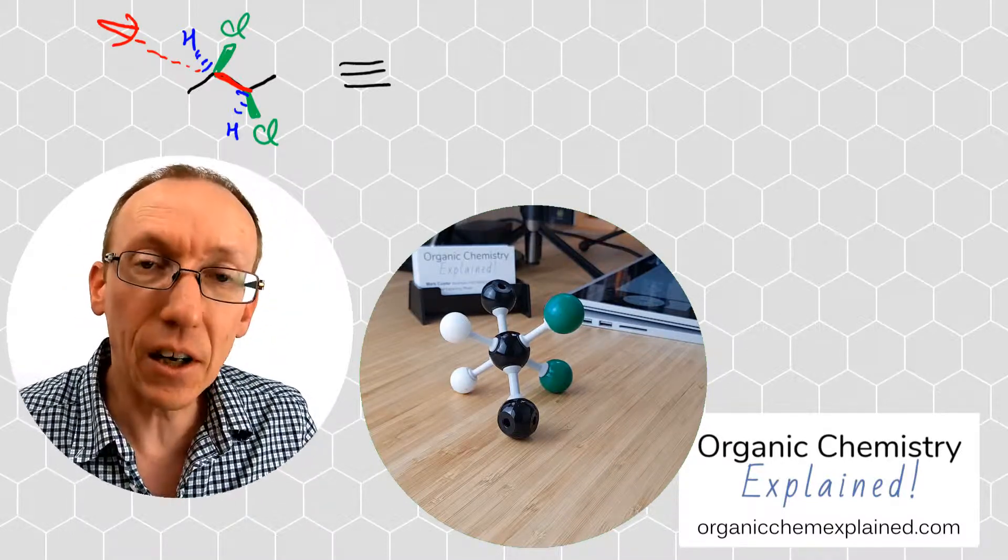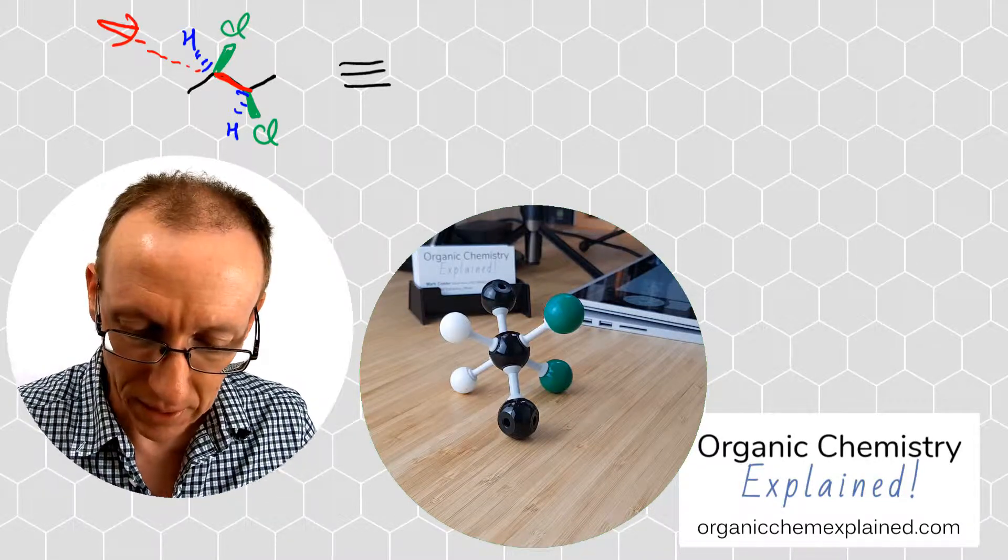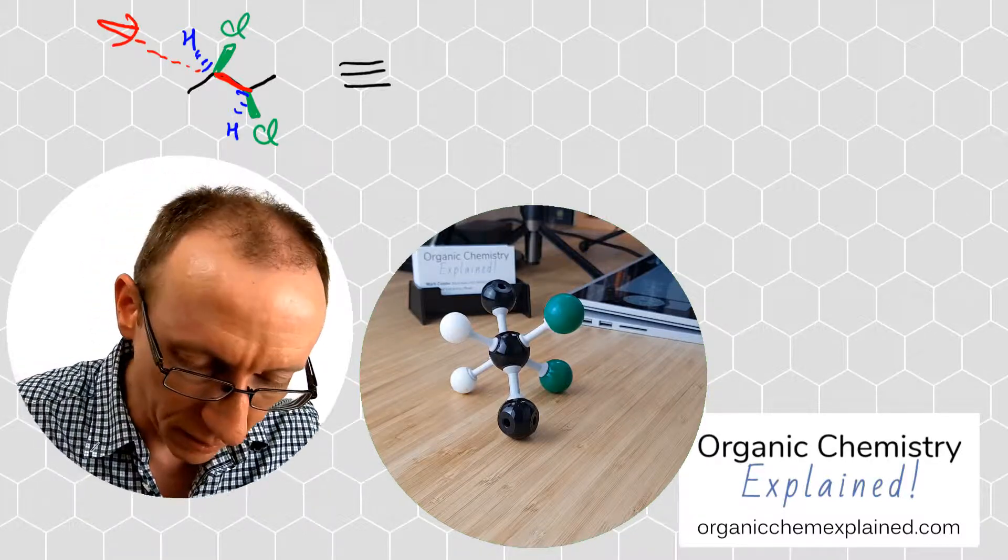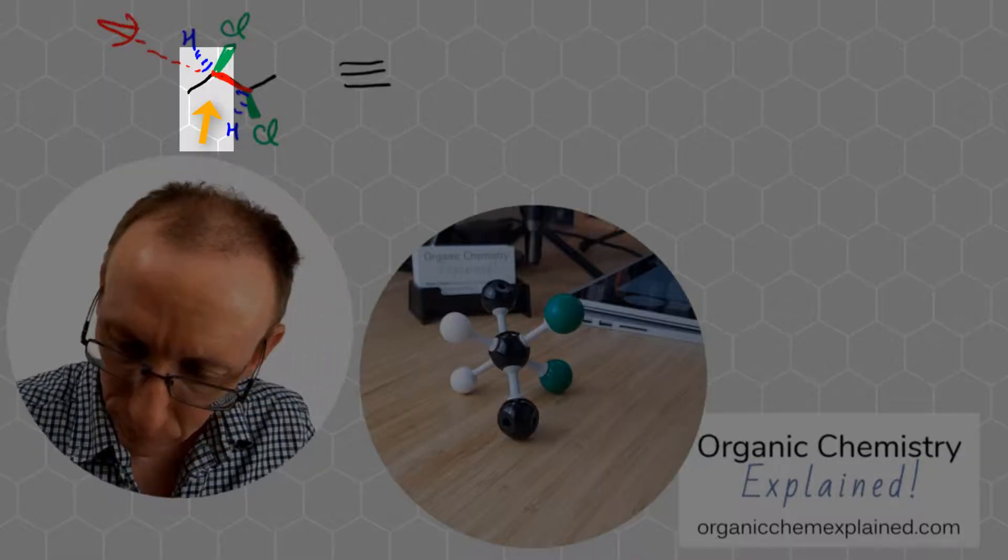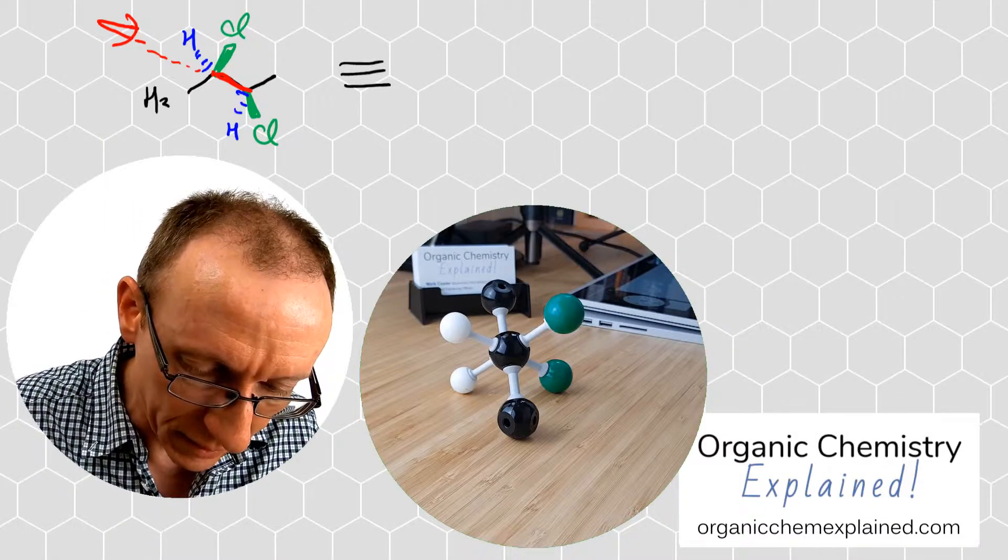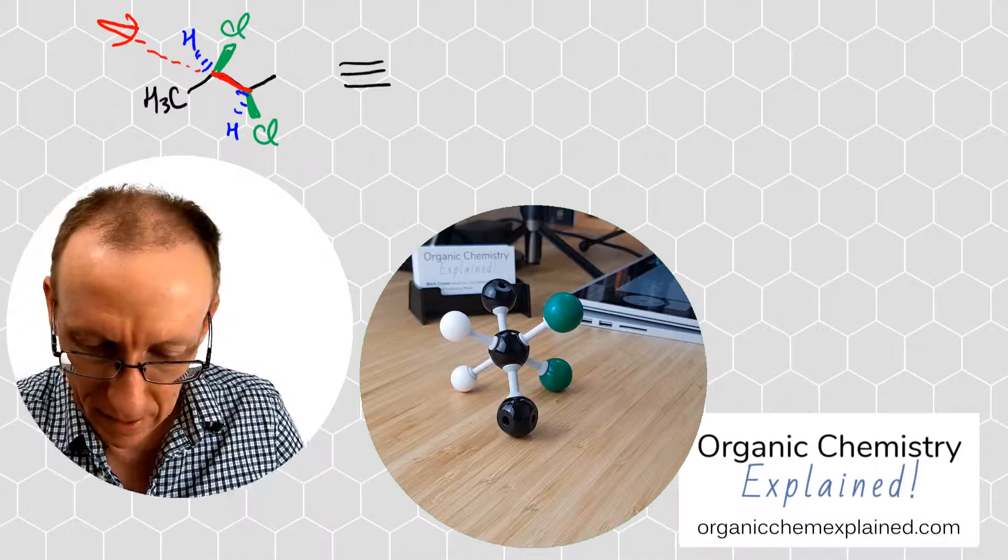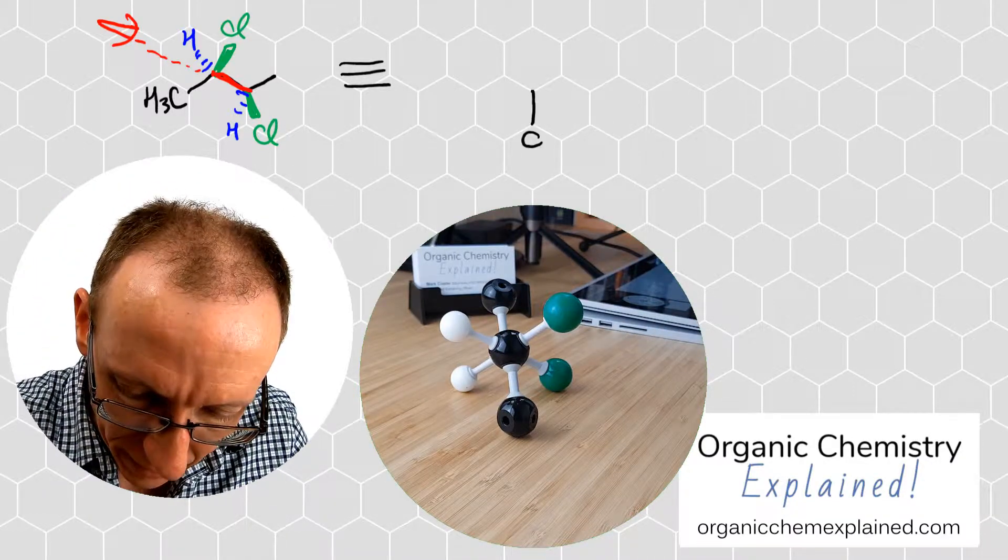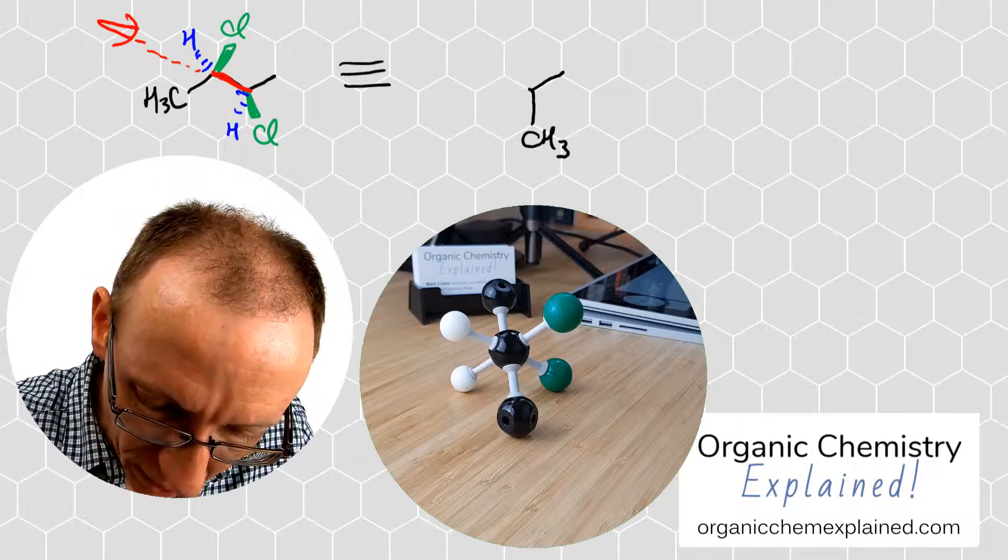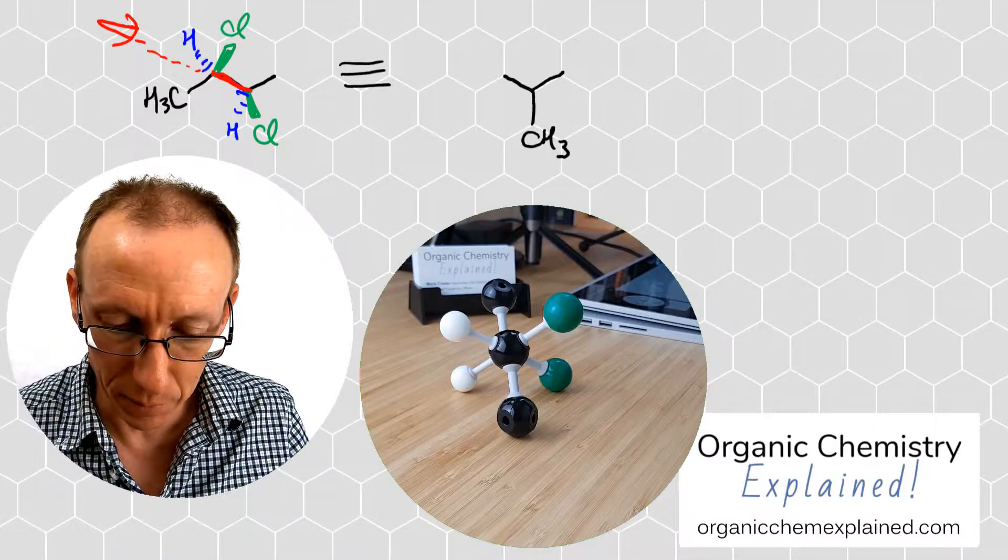First thing to do with a Newman projection is to draw three lines that meet at a point and they signify the three things attached to the front carbon atom. We're going to have a down methyl group, the CH3 group that is down here. We can use the hexagonal grid to make nice bond angles and to remind us to keep 120 degrees between each of the groups.